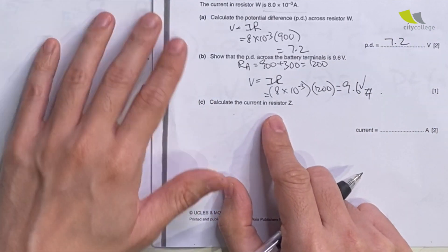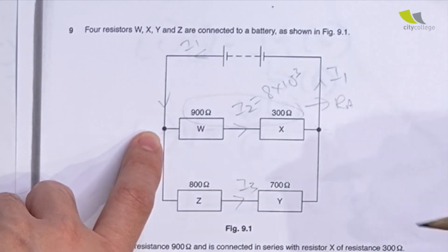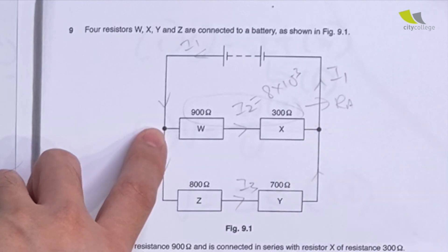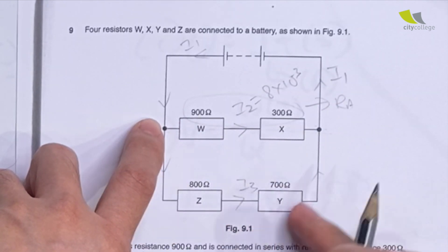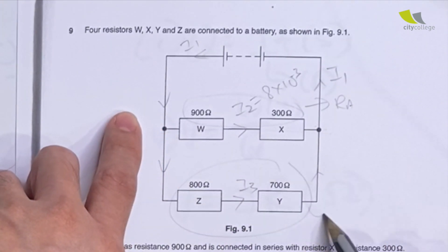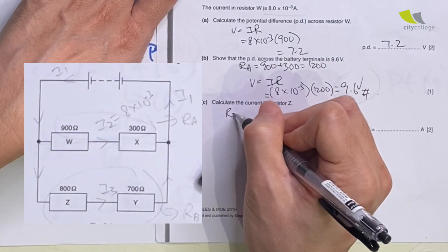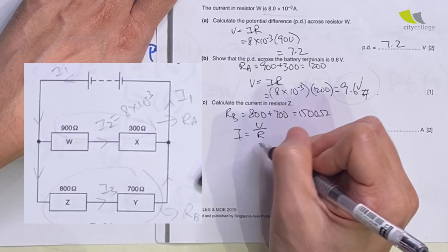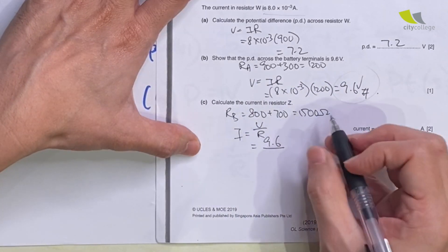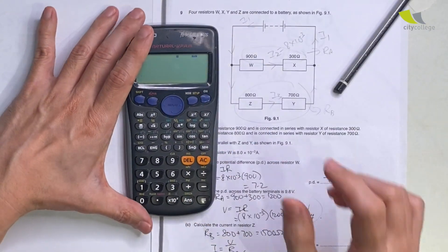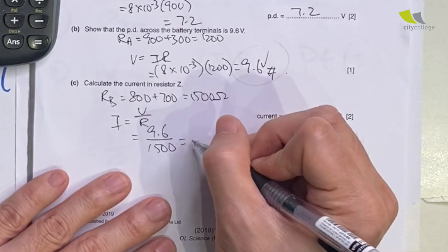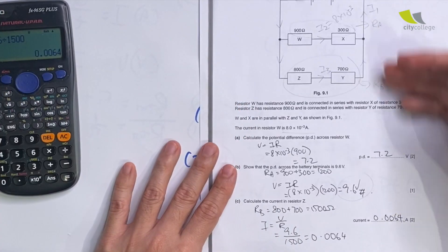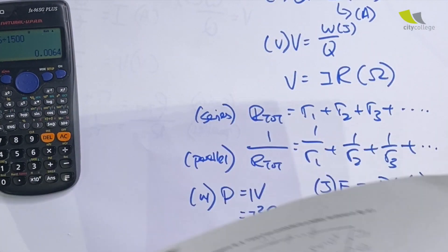To calculate the current in resistor Z: Z is in the parallel branch, and the same PD of 9.6 V applies across it. The total resistance of that branch is Rb = 800 + 700 = 1,500 ohms. So I = V/R = 9.6 / 1,500 = 0.0064 A. That's how you solve the 5-mark question.